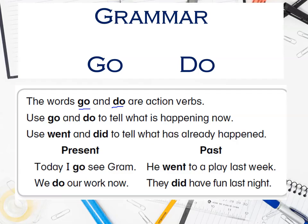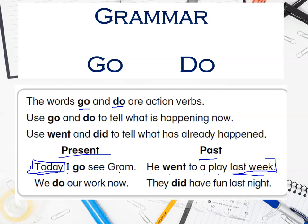Let's read the examples. In present we say: 'Today, I go to see Graham.' In past we say: 'He went to a play last week.' The word 'today' tells us something happens in the present — today is now. The keyword 'last week' informs us about something that happened and is done; last week already passed.